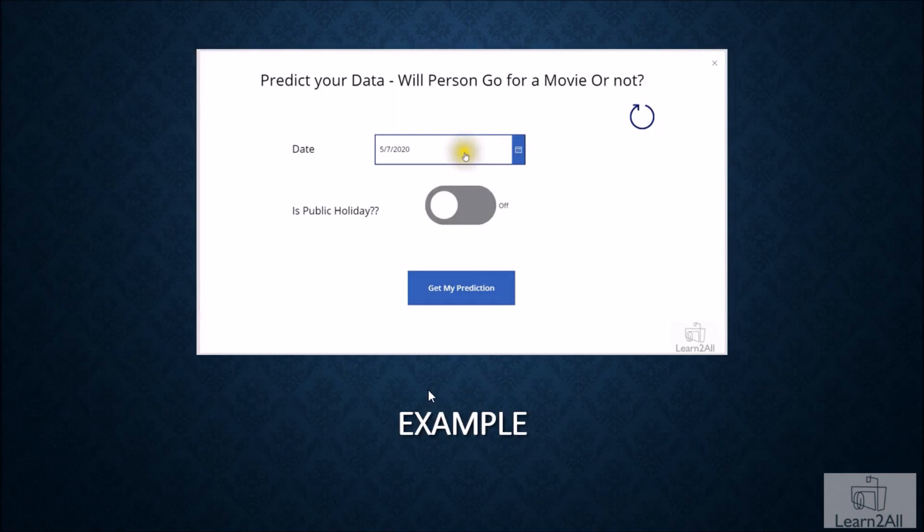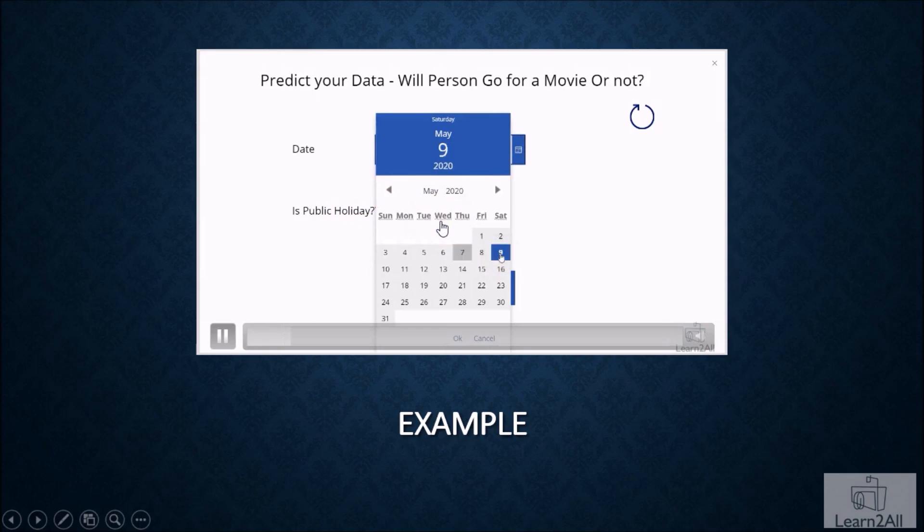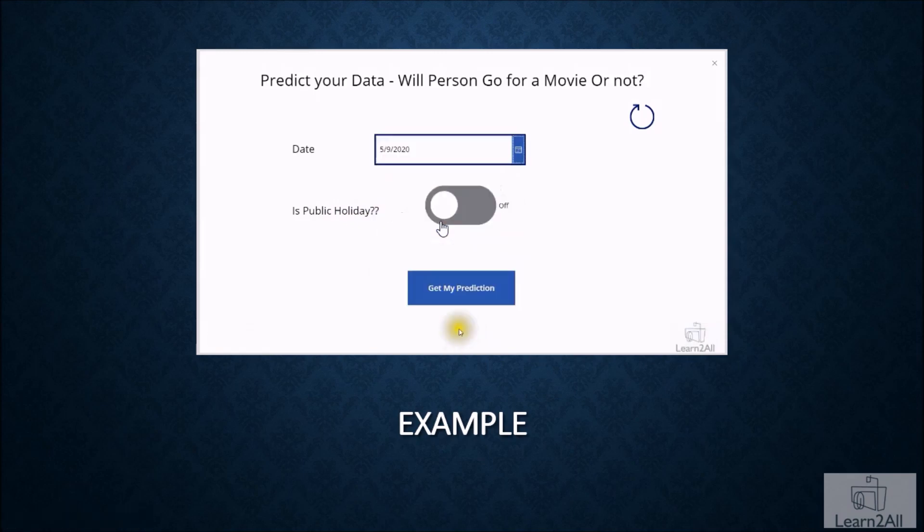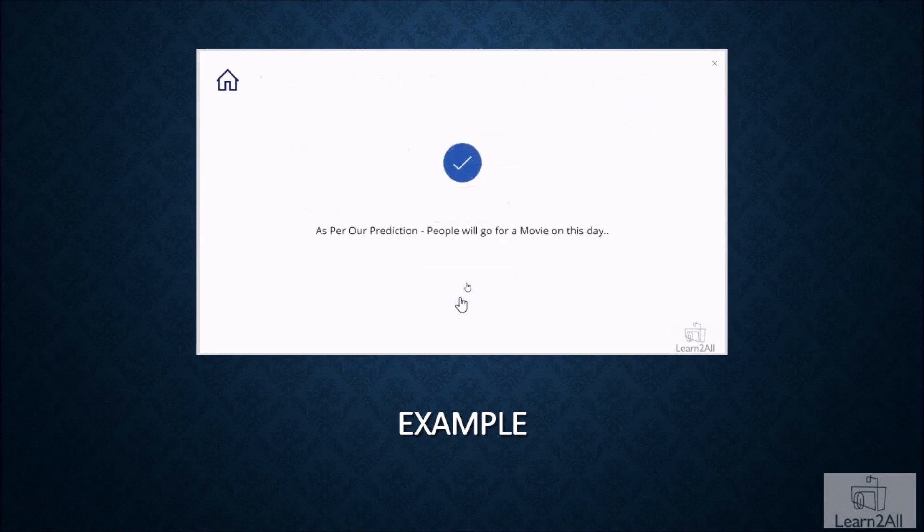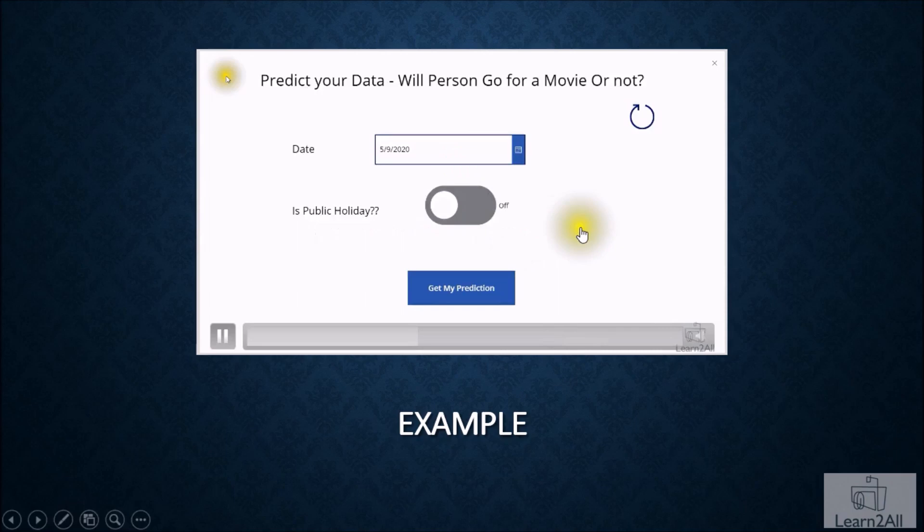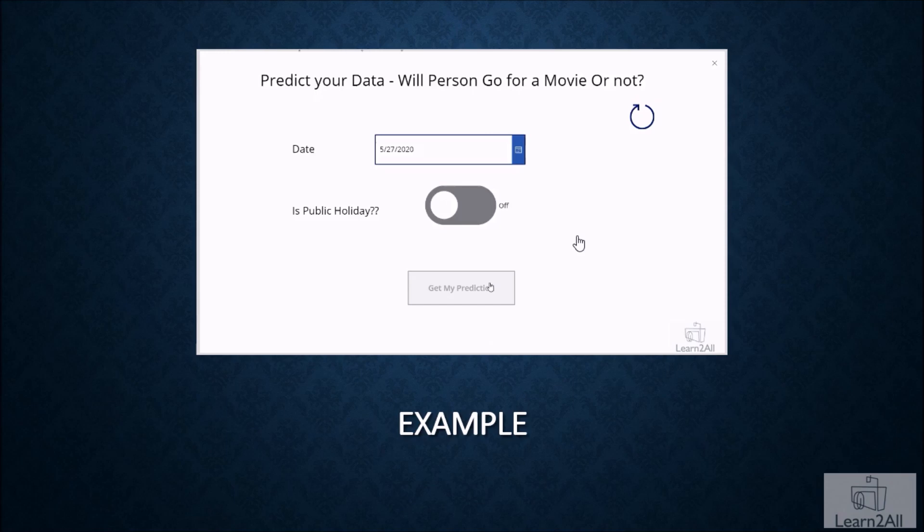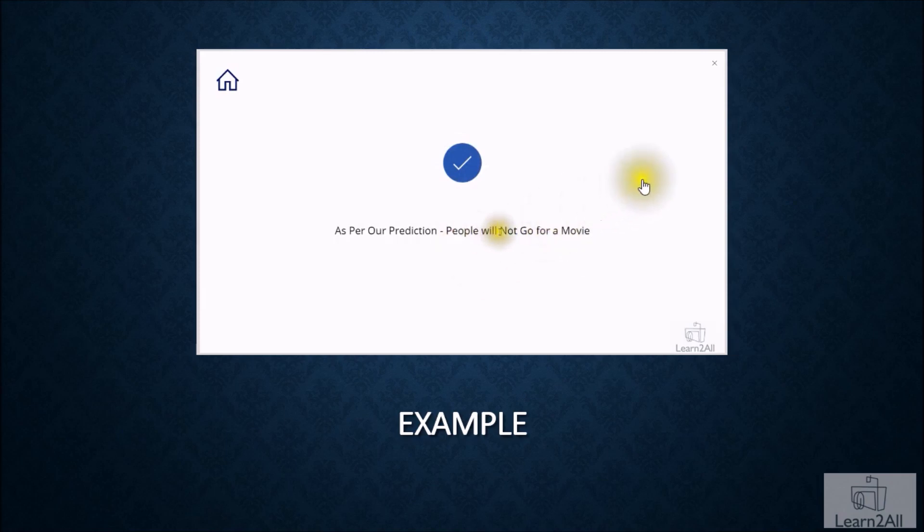Now during this session, I have taken an example of Power Apps. Let me play this demo for you. I have one app where people will enter the future date and they will select public holiday or not and click on get my prediction. Based on Power Apps AI model, it will predict whether people will go for a movie on this day. If people select any weekday and click on get my prediction, AI model automatically detects and gives us this type of prediction.